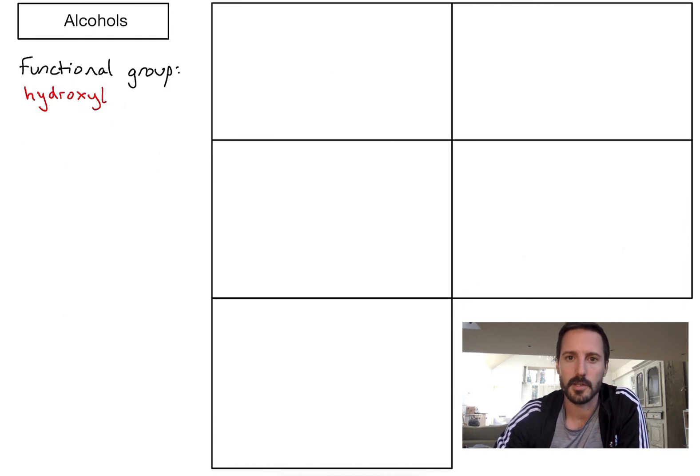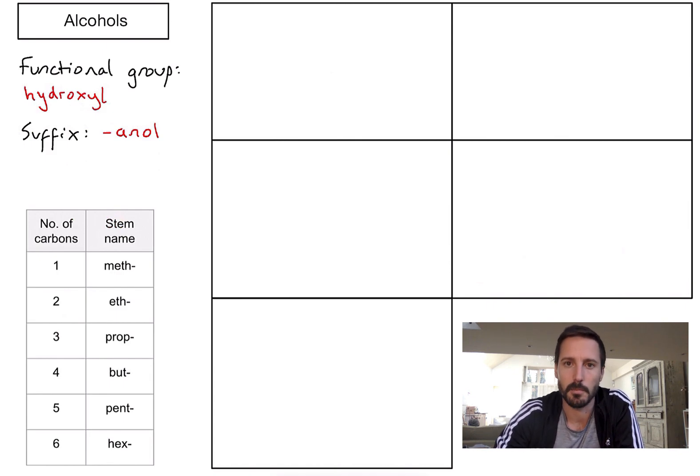When naming the alcohols, we need to remember that the suffix or the end of the name is going to be changed to -anol. For reference, let's include that small table of our stem names which relates to the number of carbons in the main chain of the compound.